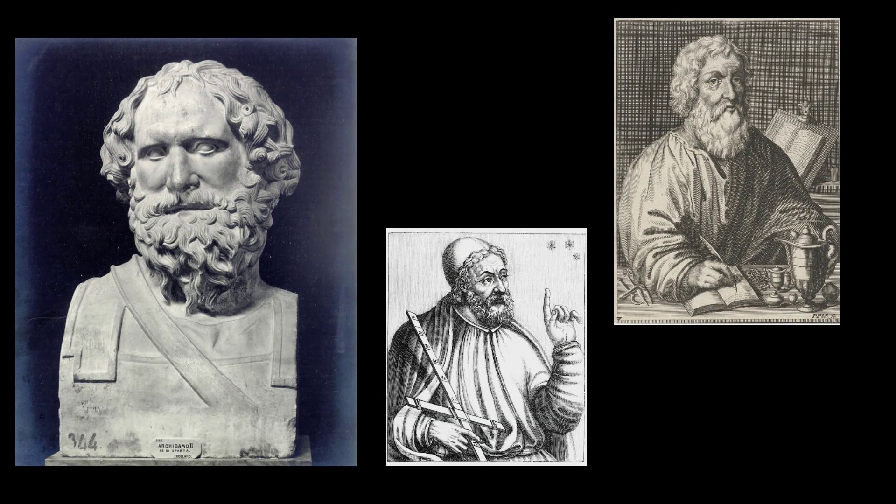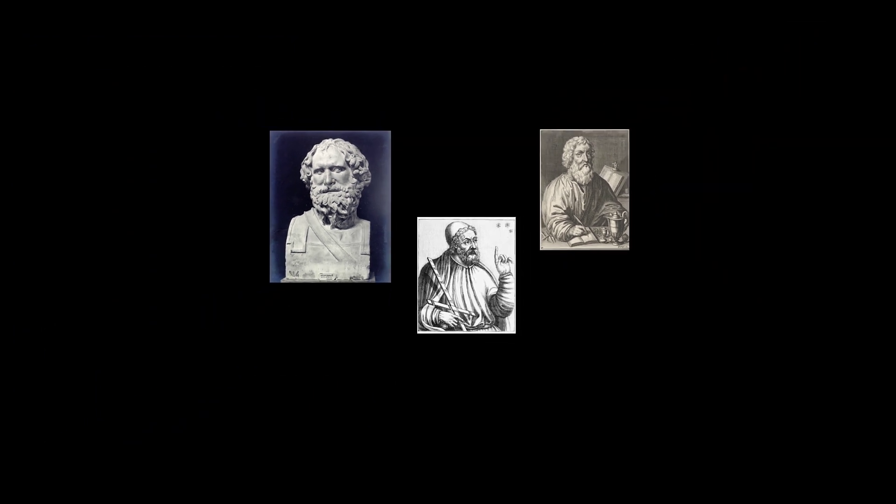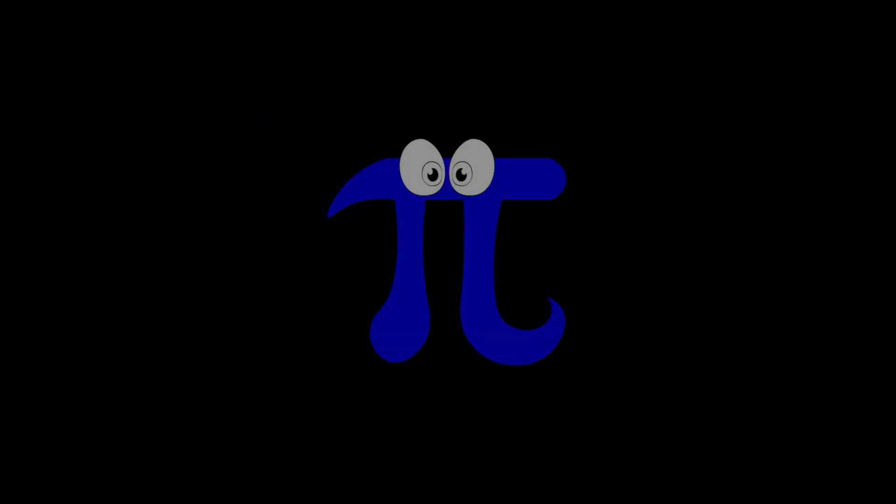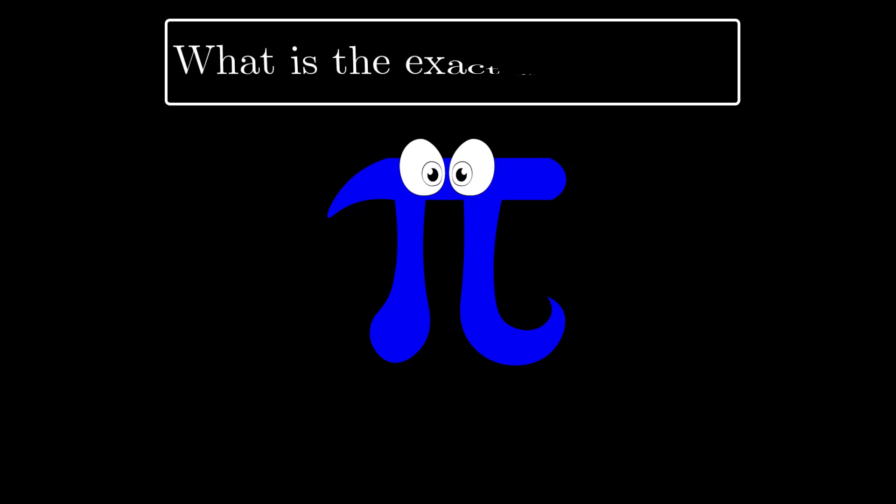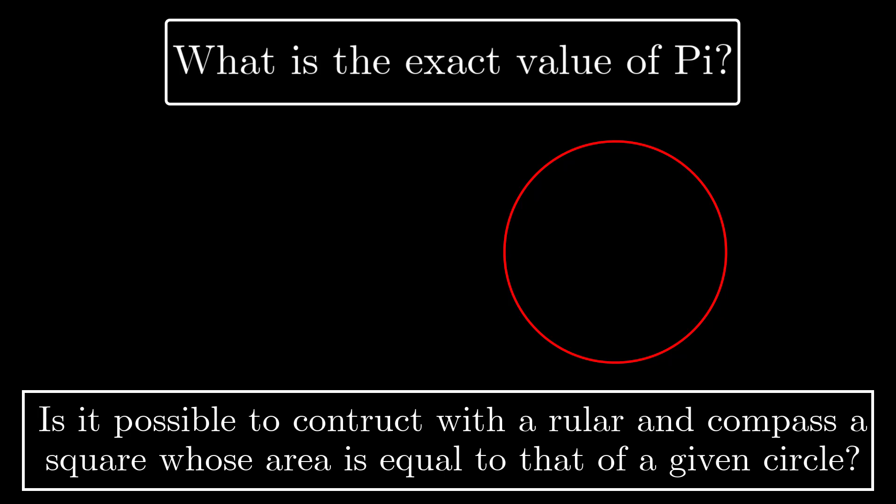The Greek Mathematicians 2,000 and more years ago concerned themselves with several problems relating to Pi. First, what is its exact value? Second, is it possible to construct, using a ruler and a compass, a square whose area is that of a given circle? This is the problem of squaring the circle.